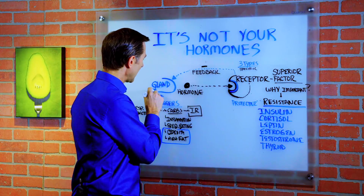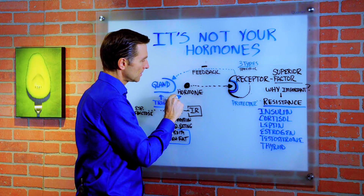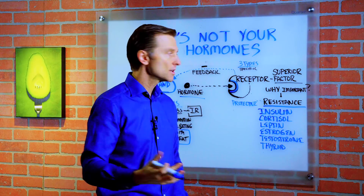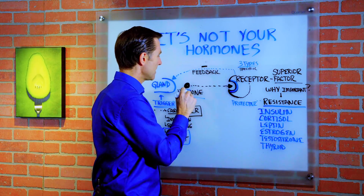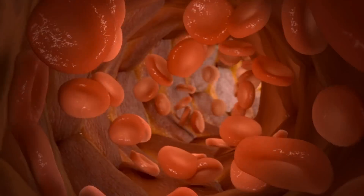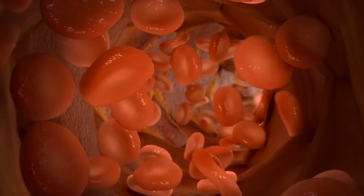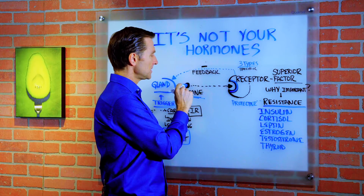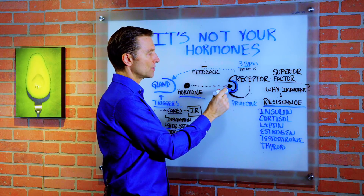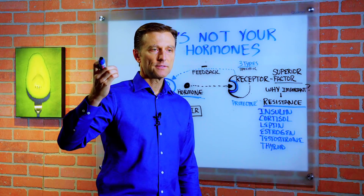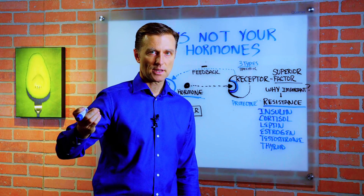You have the gland that makes hormones. Hormones are communication particles and they deliver messages through the blood. These hormones are then sent to certain tissues that have receptors. Very specific hormones go to very specific receptors to do very specific functions.